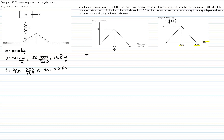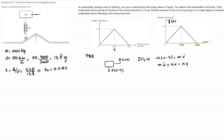For the free body diagram, we have only one force — the spring force. We measure x from the equilibrium position, so we do not draw the weight. Summing forces in the vertical direction and applying Newton's second law, the equation of motion becomes mẍ + kx = ky, where y is the road displacement representing the bump.